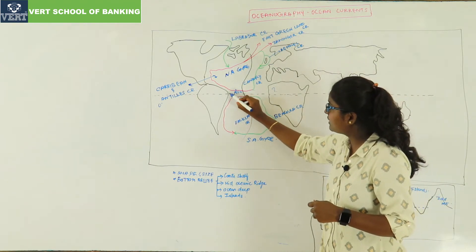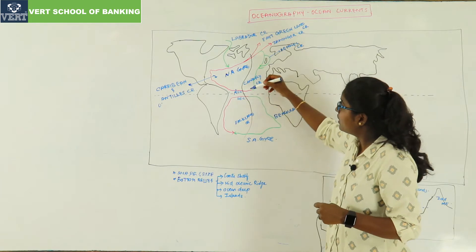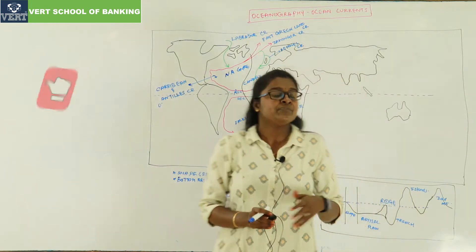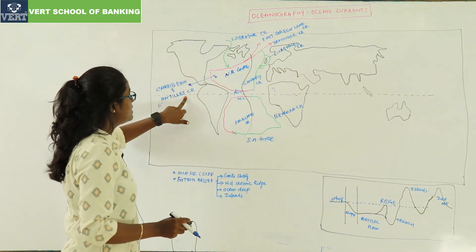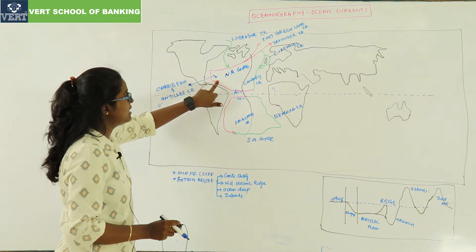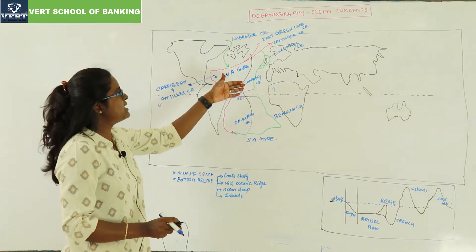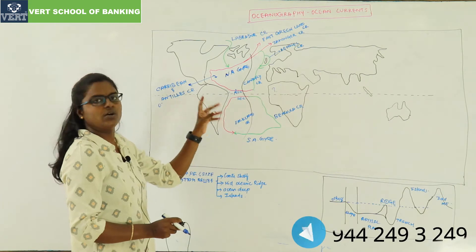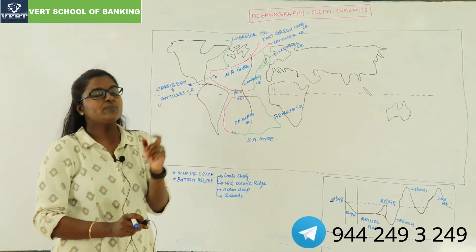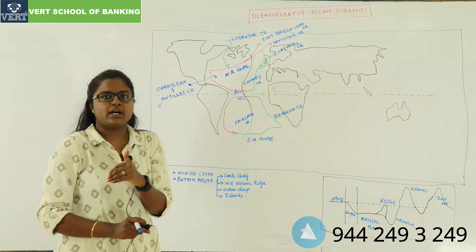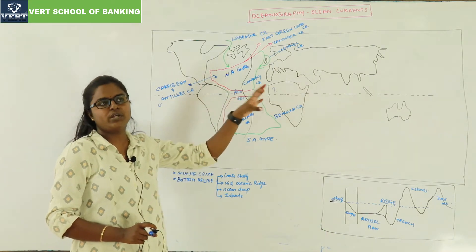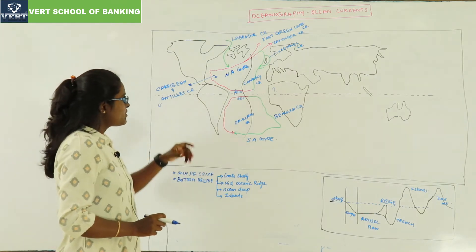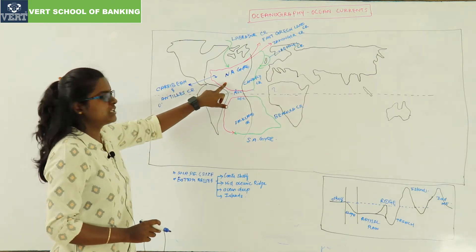First, the North Equatorial Current moves towards the poles. The currents that come towards the poles are the Caribbean and Antilles currents. The Caribbean Islands and Antilles Islands are located here; the currents pass alongside them and are named accordingly as Caribbean and Antilles currents. These are warm ocean currents.